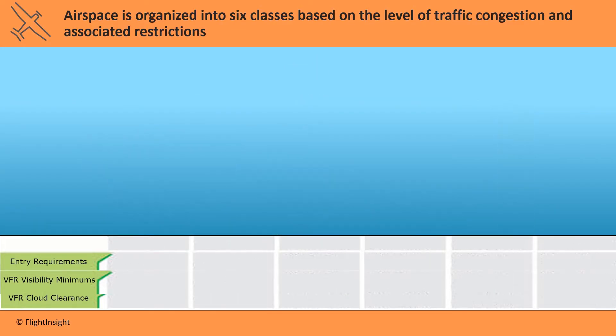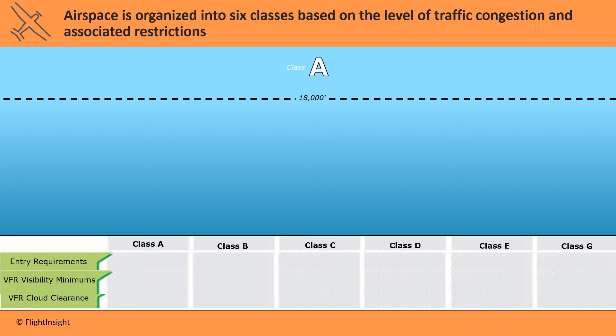Class A airspace overlies the entire country and starts at 18,000 feet MSL. Only IFR flights are allowed in Class A airspace, so as private pilots without our instrument ratings, we won't even be going up above 18,000 feet. It's not depicted on any chart because it's simply everywhere, overlying the nation's airspace at that altitude.